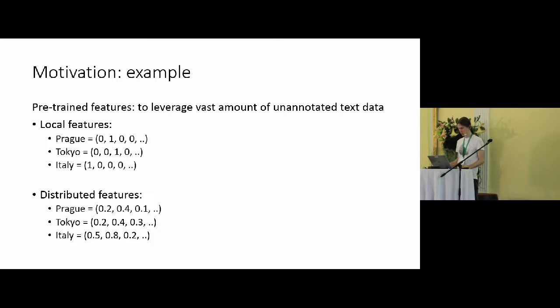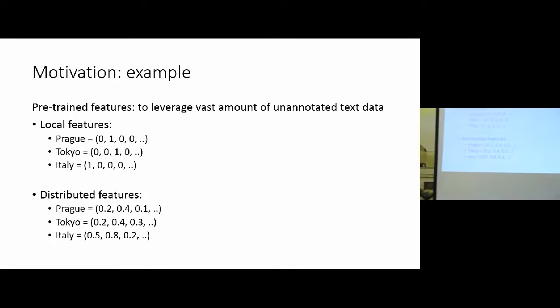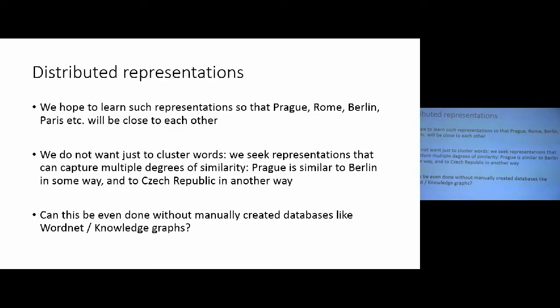So, here it's more shown what is the difference. You can think of the distributed representations as some feature vectors that are dense. So, the vectors are not orthogonal to each other as is the case of the local features. And here we can see that, for example, Prague and Tokyo should be probably close to each other because they are capital cities, while a country should be represented by a vector that is kind of further away from these. So, this is what we would like to obtain. And so, that's for the motivation.